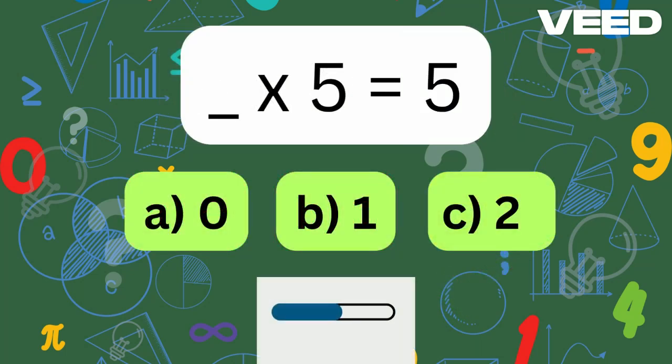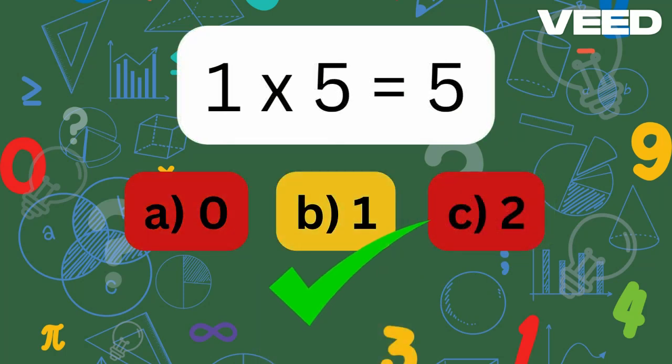What times 5 is 5? Correct, 1 times 5 is 5.